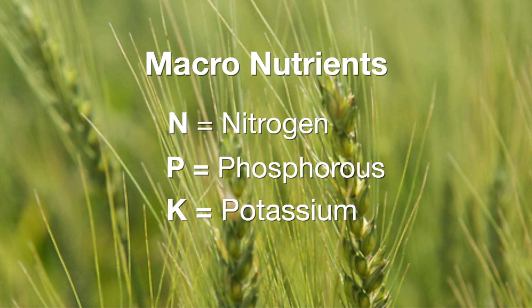N — nitrogen; P — phosphorus; K — potassium — are our macronutrients. Those are the three nutrients taken up in the greatest quantity by any of our growing plants and crops, and so they are often the most limiting because they're used in the greatest quantities. That's not to say they are any more important than the other nutrients — the secondary nutrients calcium, sulfur, magnesium, or any of the micronutrients. It's just that their utilization is so high that we see them more often as a deficiency in the soil system.